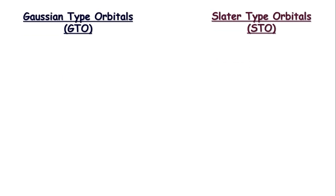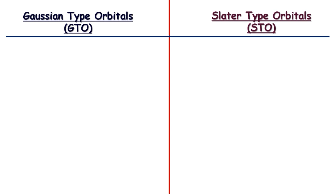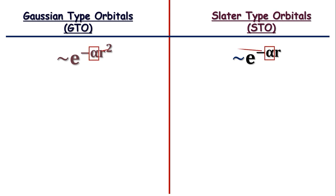GTOs vary as e to the power of minus alpha r squared, whereas the dependence of STOs vary as the exponential of negative alpha r. Of course, alpha is just the exponent, which can take different values.